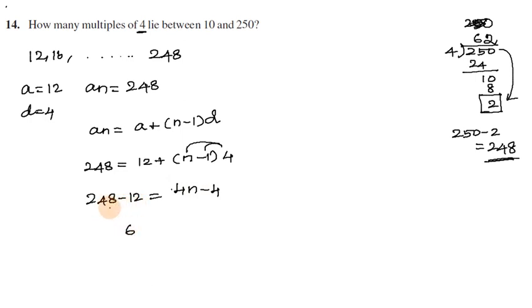236 equals 4n minus 4. Adding 4 to both sides, 240 equals 4n.